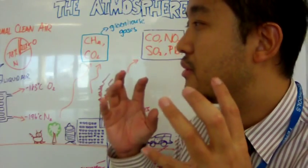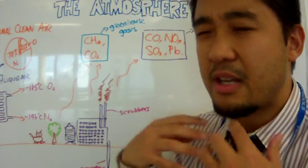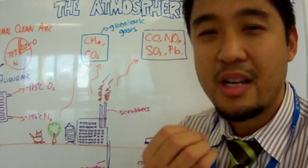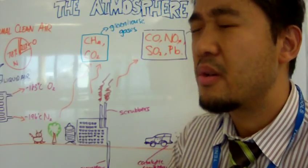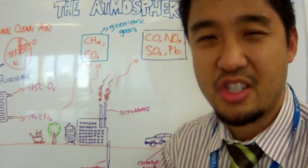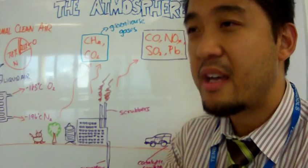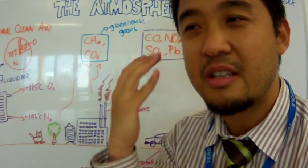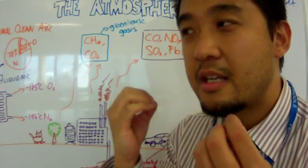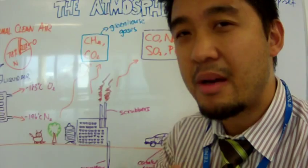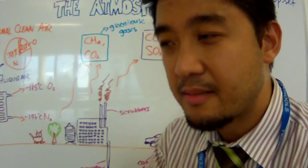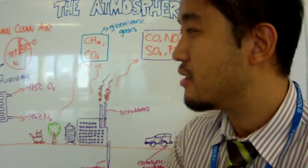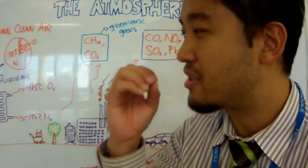Why is nitrogen 79% of all clean air? Because nitrogen itself is very unreactive. So it's just floating in the air, not doing much. And that's why after millions and millions of years, the amount of nitrogen over time accumulates. So as of today, 79% of all clean air is comprised of nitrogen.